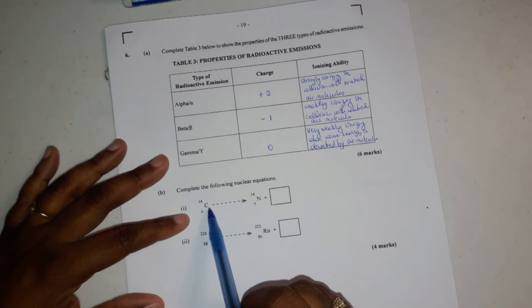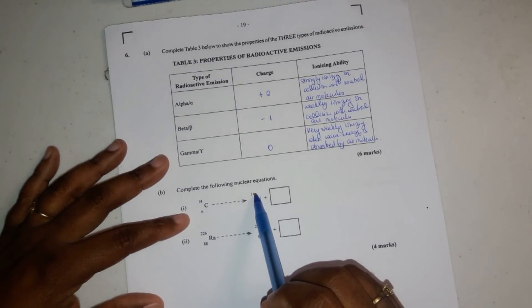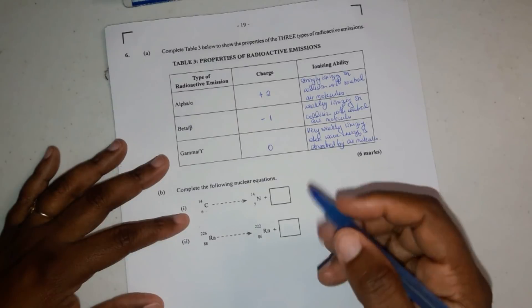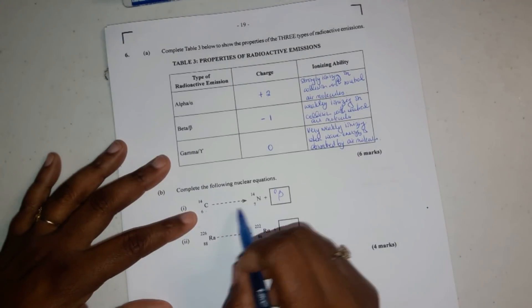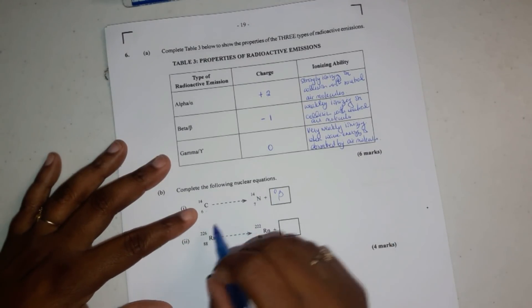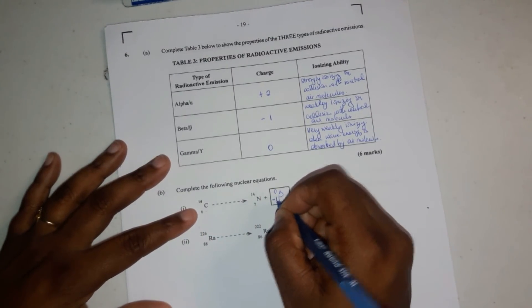And we have here, coming from carbon-14, nitrogen-14, the mass didn't change, and mass doesn't change whenever there's a beta decay. Okay, and also proton increase, which our proton number increases, our atomic number increases when there is beta decay.